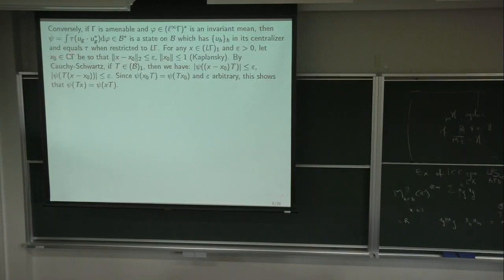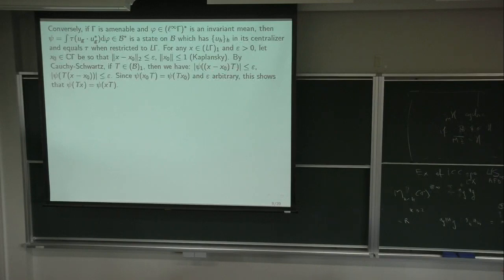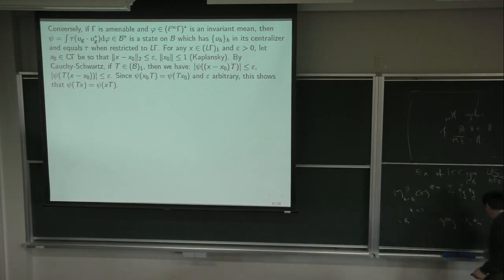In the case of factors, these two properties are equivalent. So the corollary from this discussion: if M is amenable and B is a von Neumann subalgebra of M, then B is amenable — the hypertrace on M restricts to a hypertrace on B.